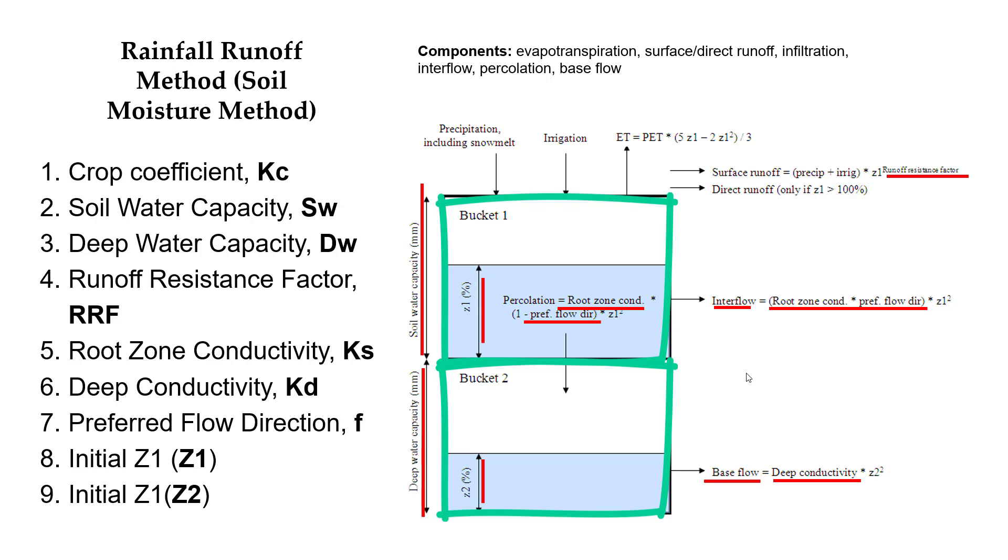The catchment has a subclassification defined by the disaggregation that was considered appropriate to represent processes such as evapotranspiration, runoff, infiltration, and percolation. Each classification of the catchment corresponds to the root zone, while the deeper zone is assigned to the entire catchment.